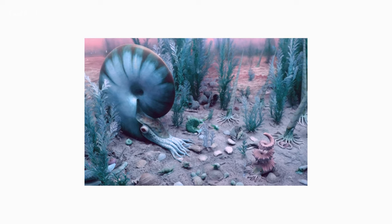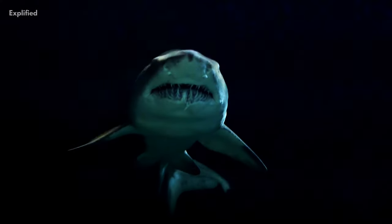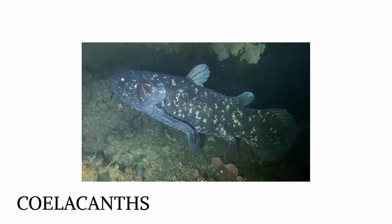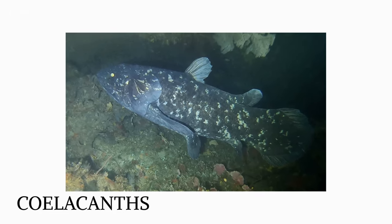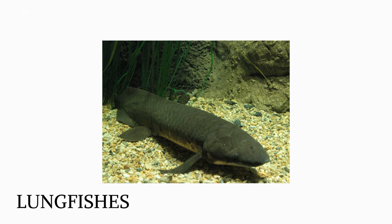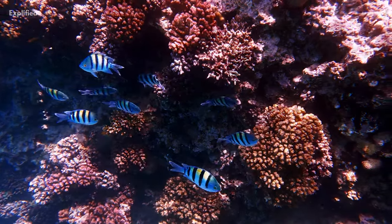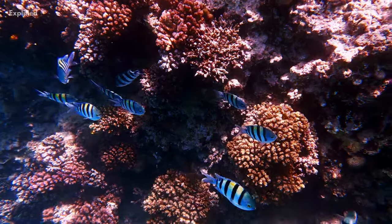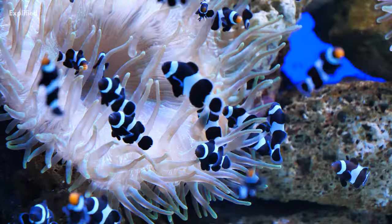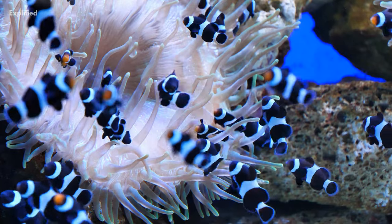Sharks were particularly prevalent among the fish, while coelacanths, acanthodians, and lungfishes were among the bony fish. The period's unrestricted contacts across continental shelves resulted in a marine fauna that was widely scattered over the globe.